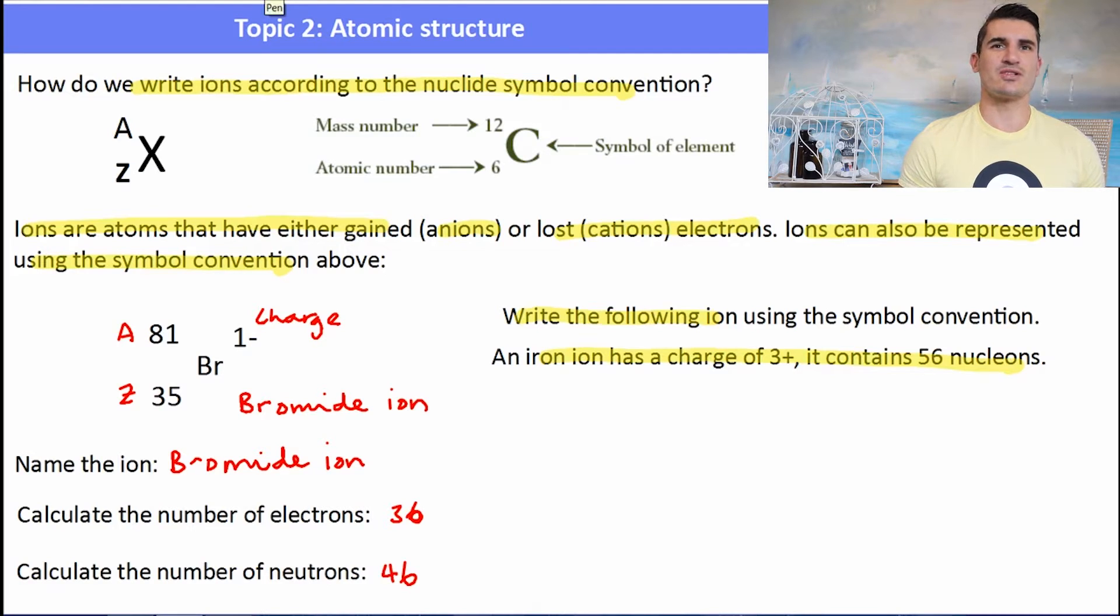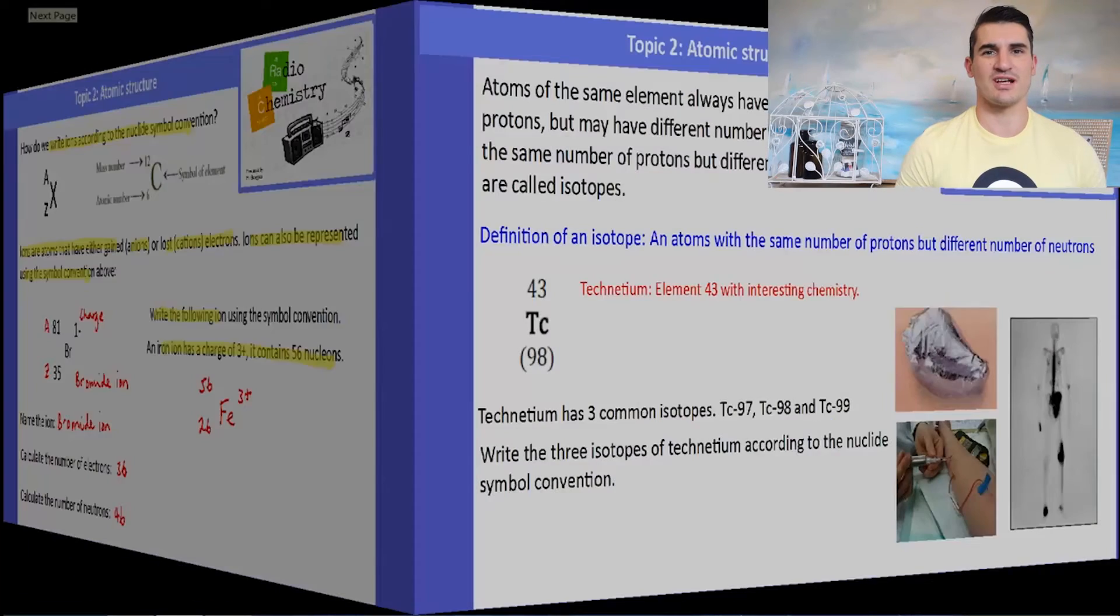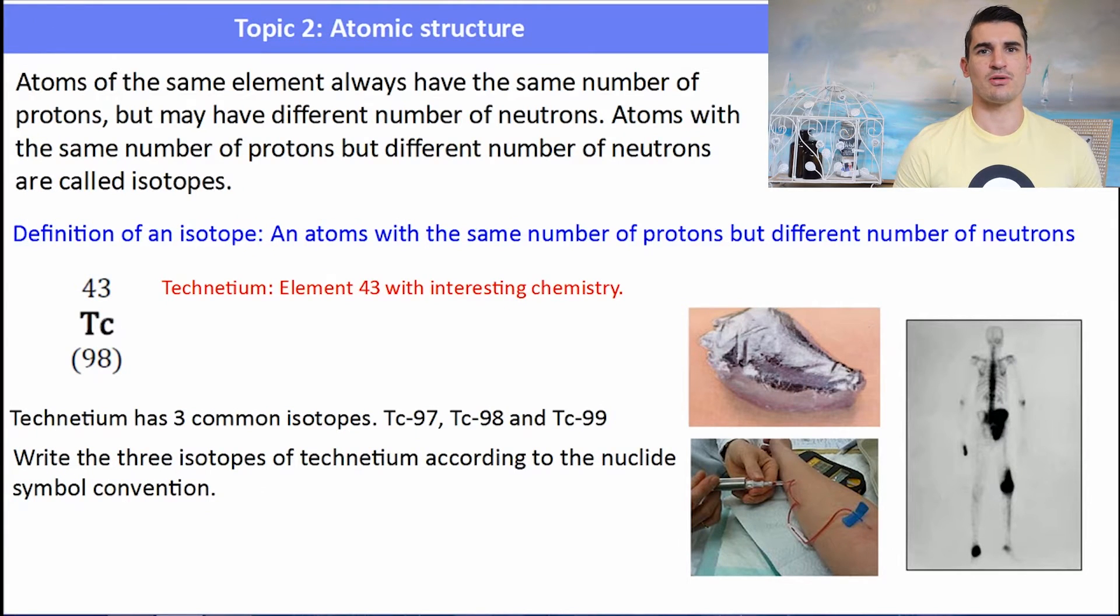Here's another one where we need to write the symbol for iron that has a charge of 3 plus and contains 56 nucleons. So we have Fe and its charge is 3 plus so we write that in the top right hand corner. An iron atom always has 26 protons. So the atomic number is 26, we stick that down the bottom left. And because it has 56 nucleons, that means it has 26 protons and the rest are neutrons. So we stick that in the top left.